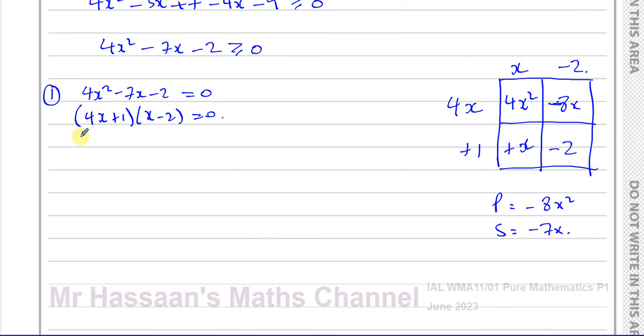And so therefore, we can say that either 4x plus 1 equals 0 or x minus 2 equals 0. In this case, x is equal to negative 1 quarter and x is equal to 2. Now, the mark scheme mentions very clearly that they need to see this factorizing. So you should show the fact that you factorized.